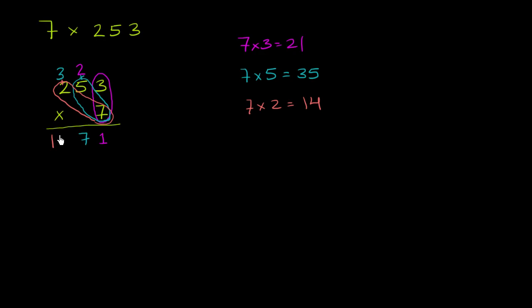Now we can write the 17 down here because 2 is the last number we have to deal with. And so we have our answer: 7 times 253 is 1771.